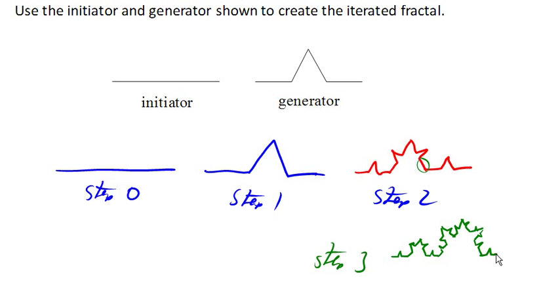And it looks something like that. And if we were to continue this process over and over again, we get this shape called the Koch curve.